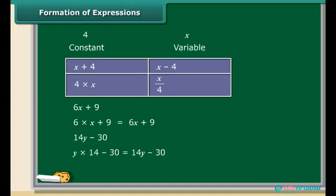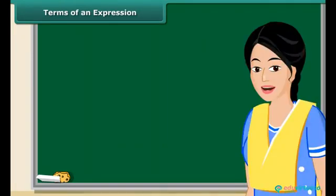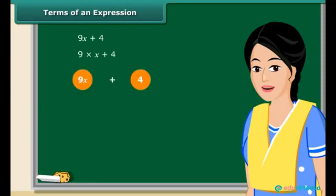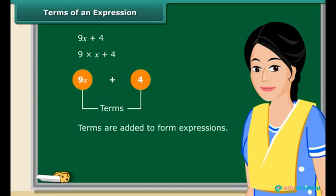You can also obtain expressions by combining variables with themselves or with other variables. Now we will discuss what terms of an expression and their factors are. Consider the expression 9x + 4. In forming this expression, we first form 9x separately as a product of 9 and x, and then added 4 to it. These expressions have parts which are formed separately and then added — we call these parts as terms.